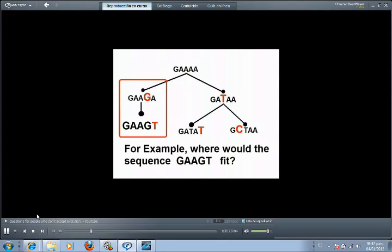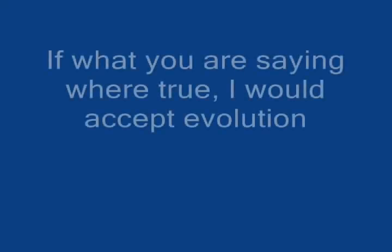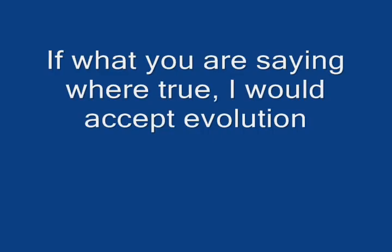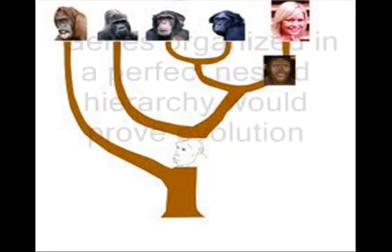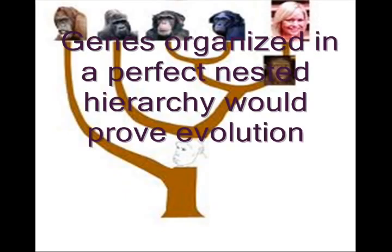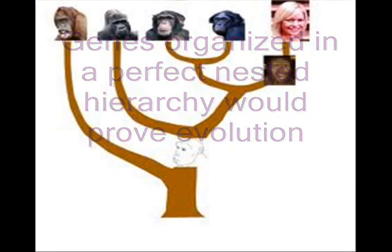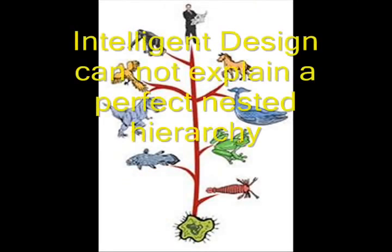Here's another question. That simply is not true. And if that were true, then that would prove evolution. Later in your video you ask what evidence will convince creationists that evolution is true. Well, at least me personally, I would accept that as evidence for evolution. If genomes were organized in a perfect nested hierarchy, as you claim in your video, then I would certainly become an evolutionist, because intelligent design cannot explain a perfect nested hierarchy.